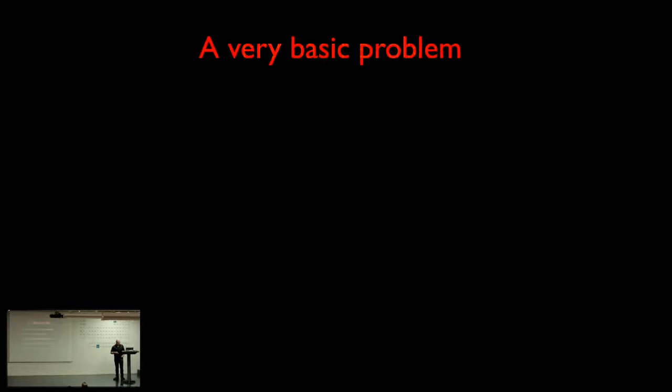So if you want to take a photo of a black hole, there is a basic problem you have to solve. Black holes, by definition, are the most compact objects in the universe. There is nothing you can make more compact than a black hole. And to make things even worse, they are at astronomical distances. So now you want to take a photo.